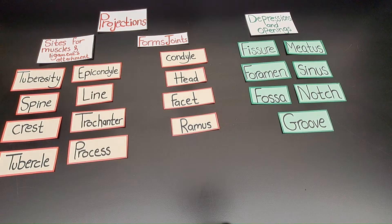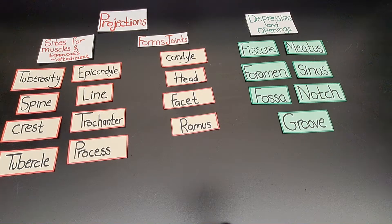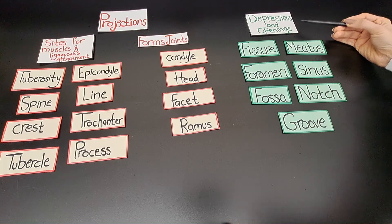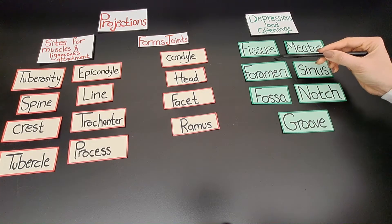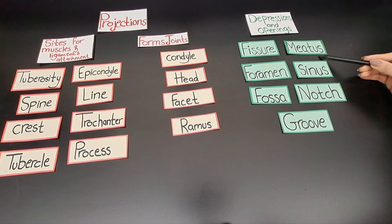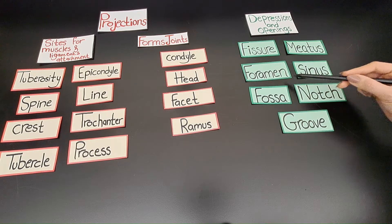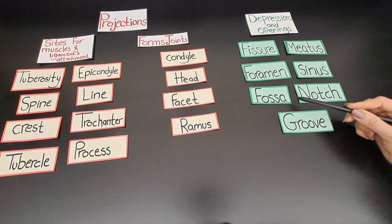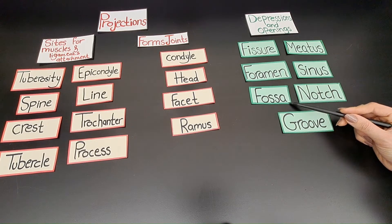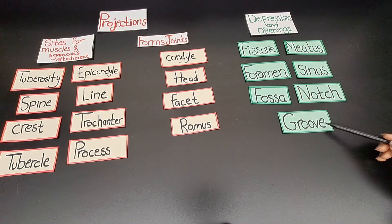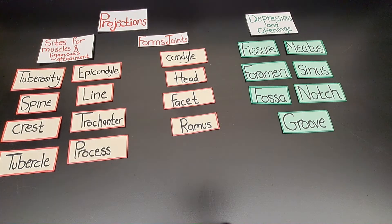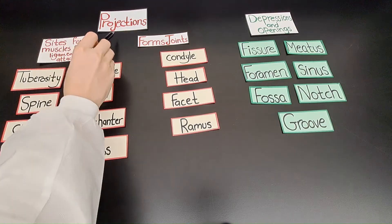Welcome back. In this video, we will go over the bone markings. Bone markings either form depressions and openings through the bone, such as a fissure, a meatus, a foramen, a sinus, a fossa, a notch, and a groove.